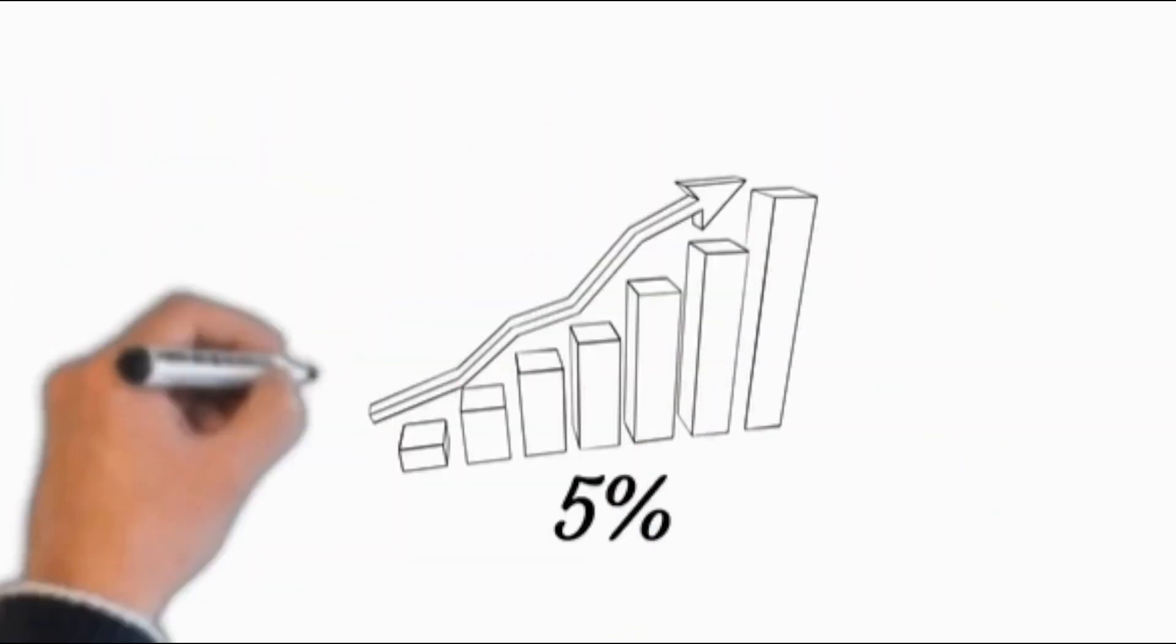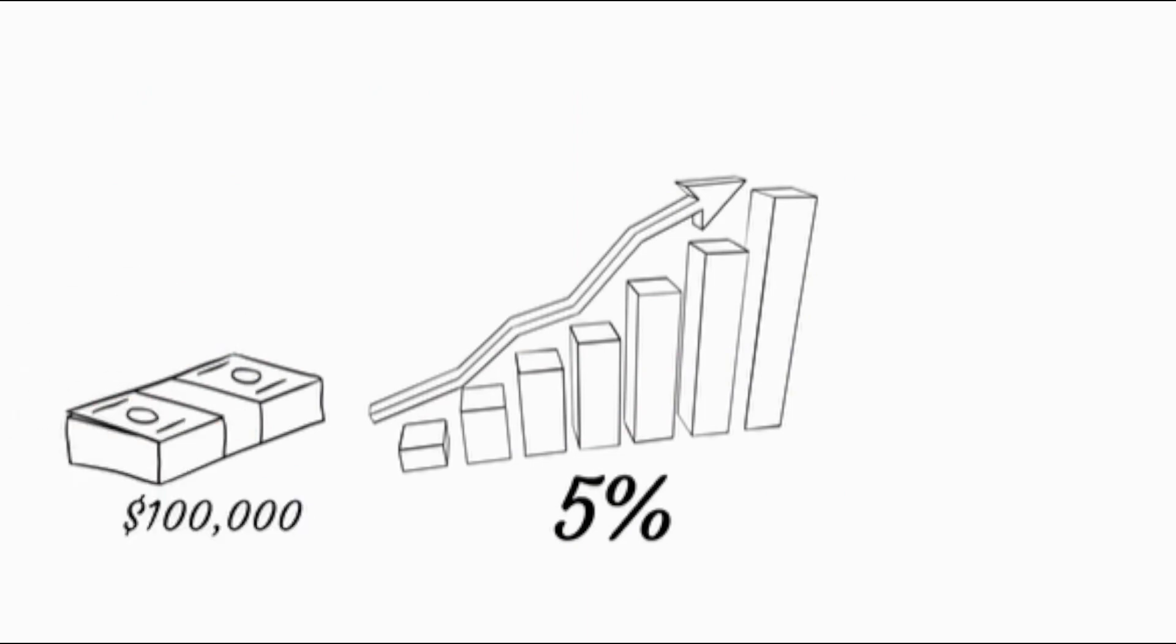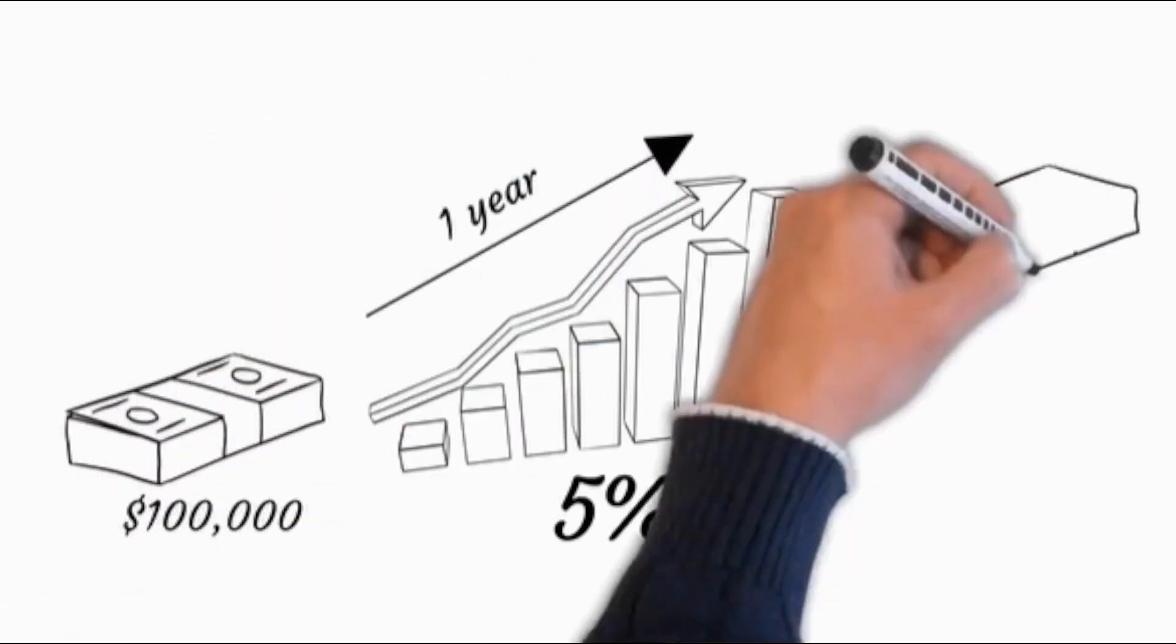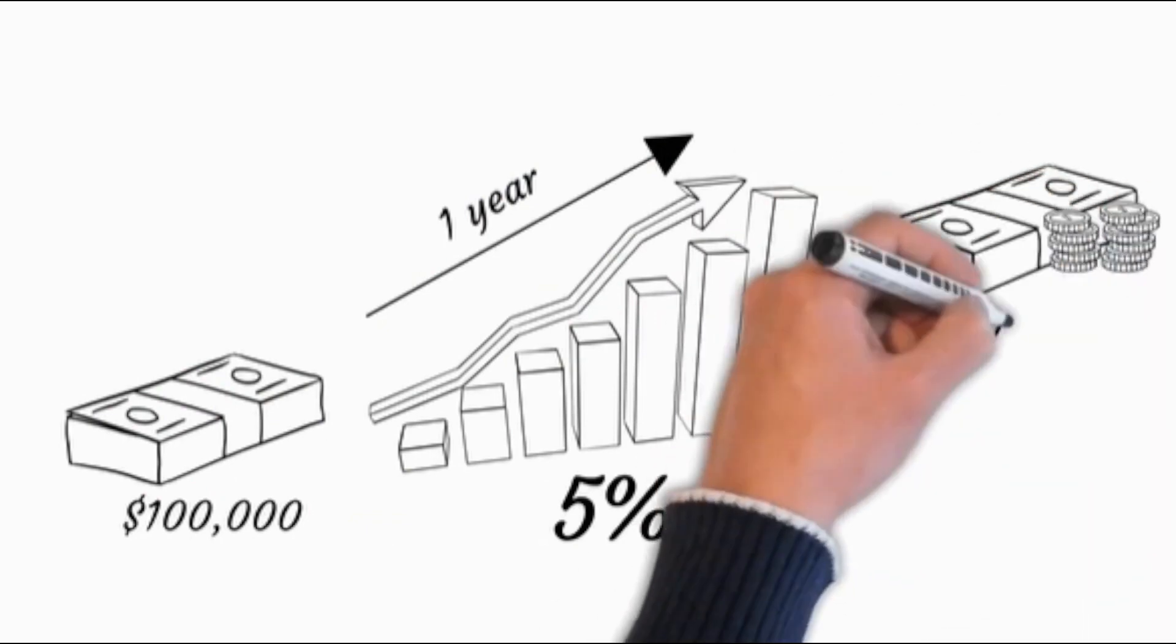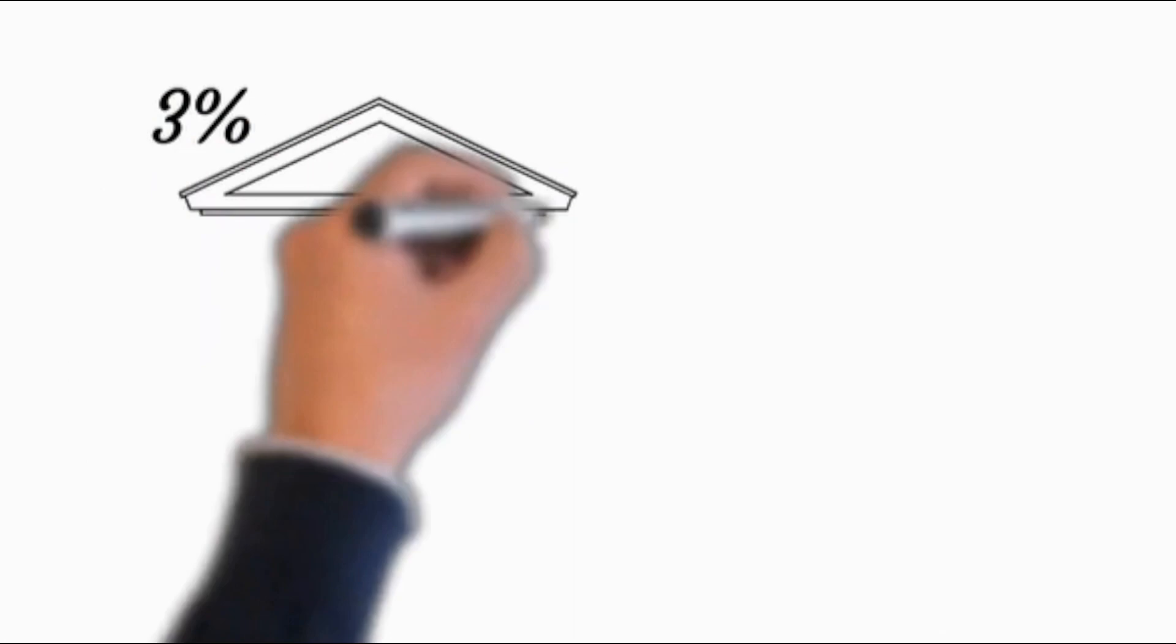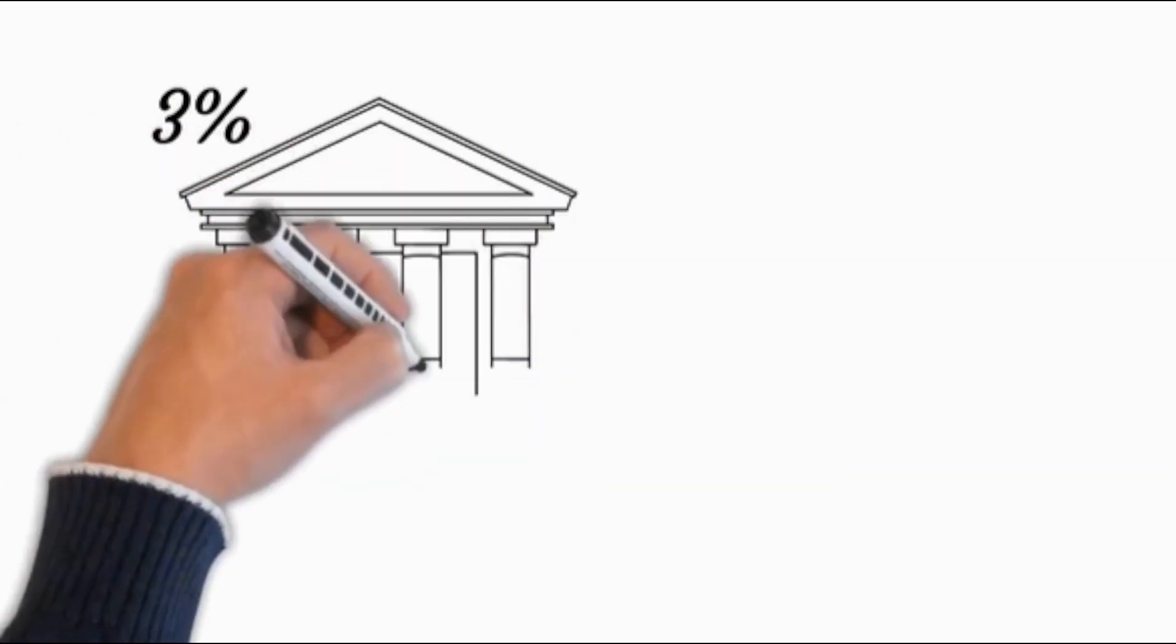Let's suppose you know of an investment that comes with 5% guaranteed returns. You have $100,000. If you invest that $100,000, after a year you'll have $105,000. Not bad, but not great either. But let's say it costs you 3% to borrow money from a bank.